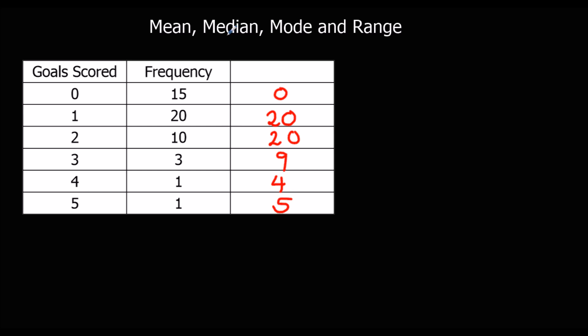So this is how, from a table, we add up the numbers. We times them across. Times, times, times, times, times, times. Times them across and add them down.